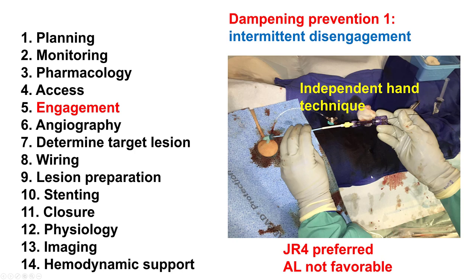This is best achieved by using the so-called independent hand technique, in which the right hand handles the balloon or stent advancement and the guide wire, whereas the left hand is used to manipulate the guide and either advance it or withdraw it, allowing engagement and disengagement. This technique is strongly recommended both for this, but also for standard PCI.